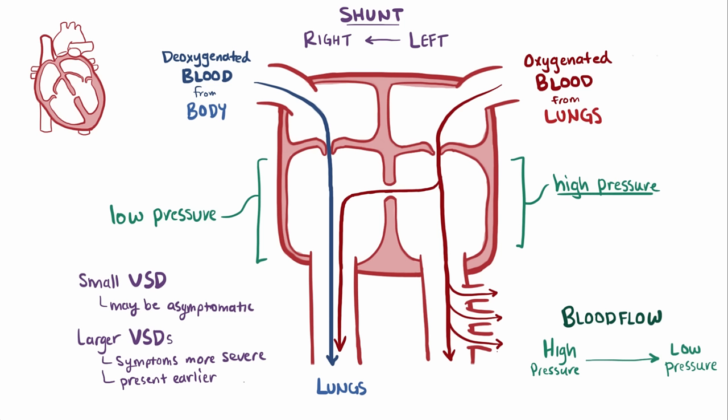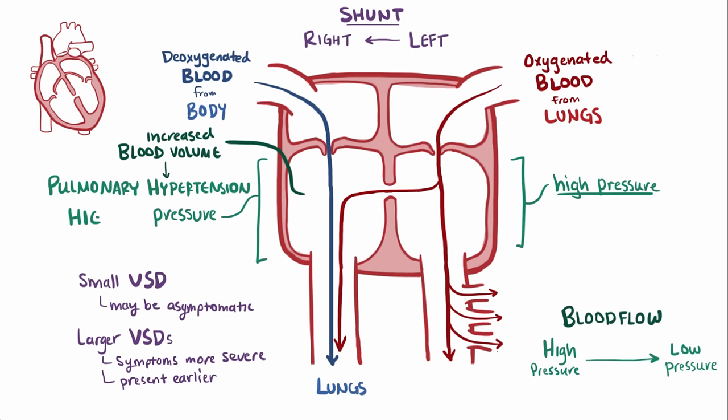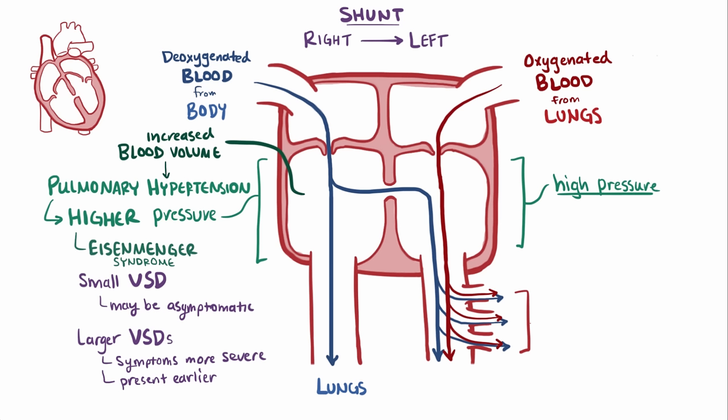As blood is shunted to the right side, blood volume increases on the right side, which might lead patients to develop pulmonary hypertension, or higher pressures on the pulmonary side. If pressure increases to a point where the right side is more than the left side, then the direction of blood flow through the VSD can switch from left-to-right to right-to-left — a condition known as Eisenmenger syndrome. Now deoxygenated blood is escaping out to the systemic circulation and being pumped out to the whole body via the aorta, meaning less oxygen is being delivered to the tissues.